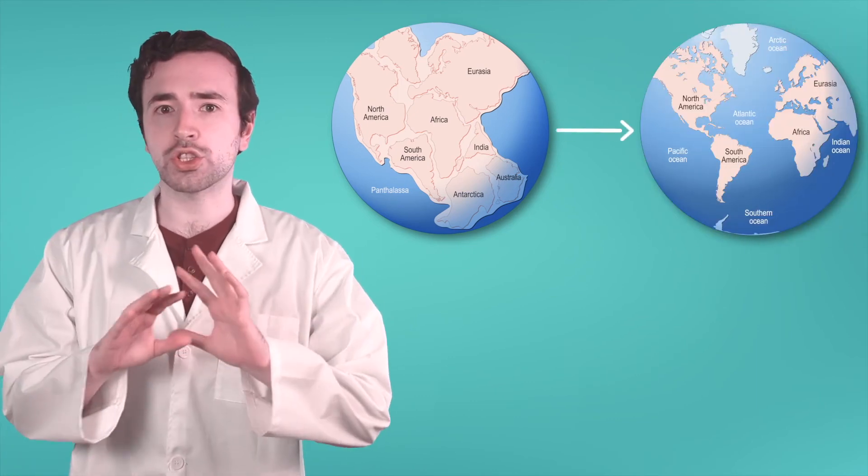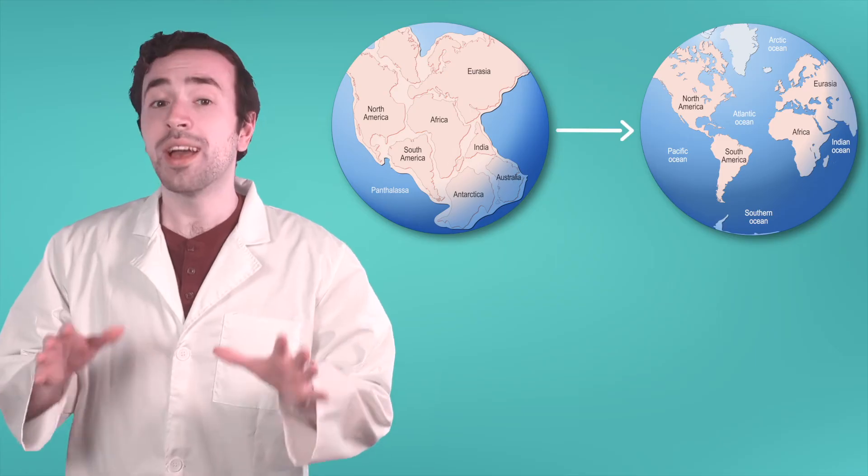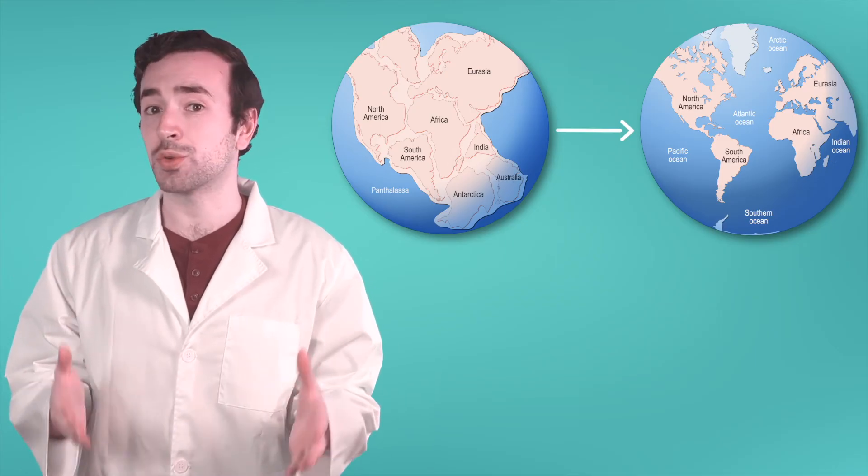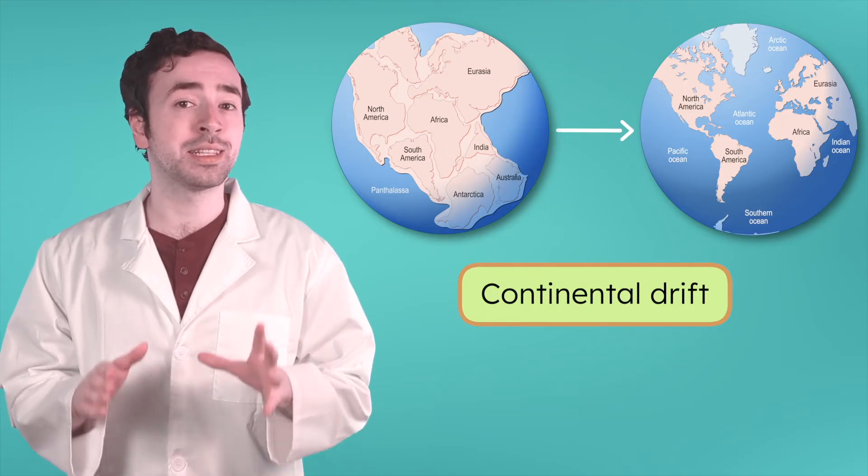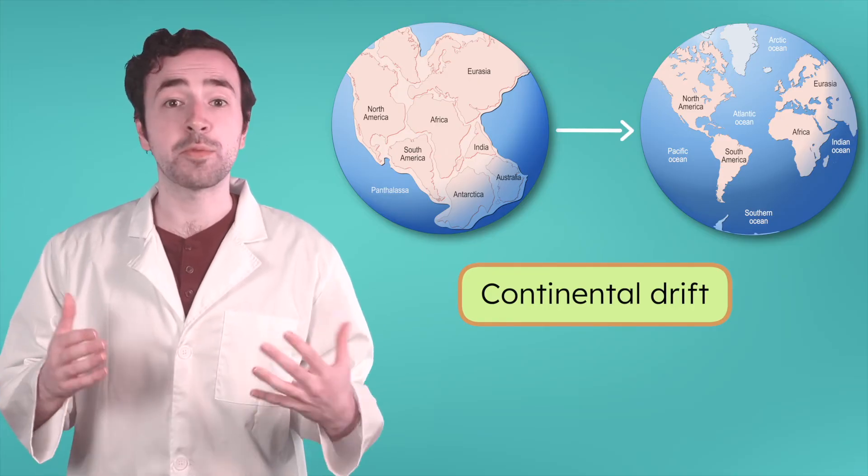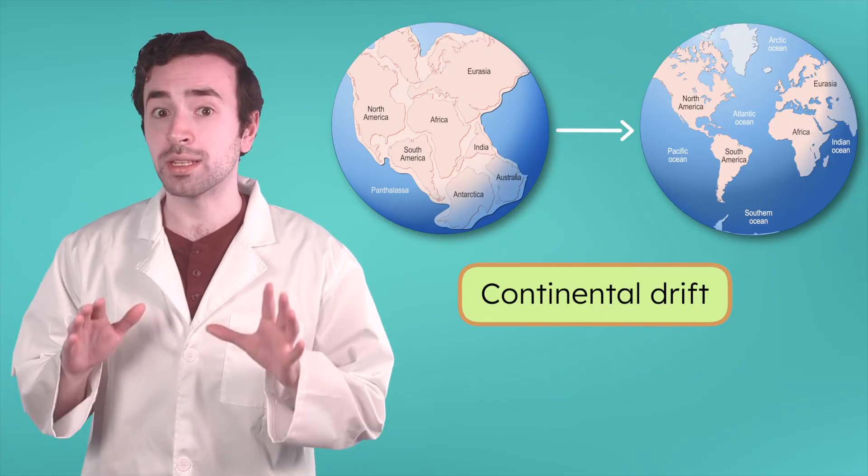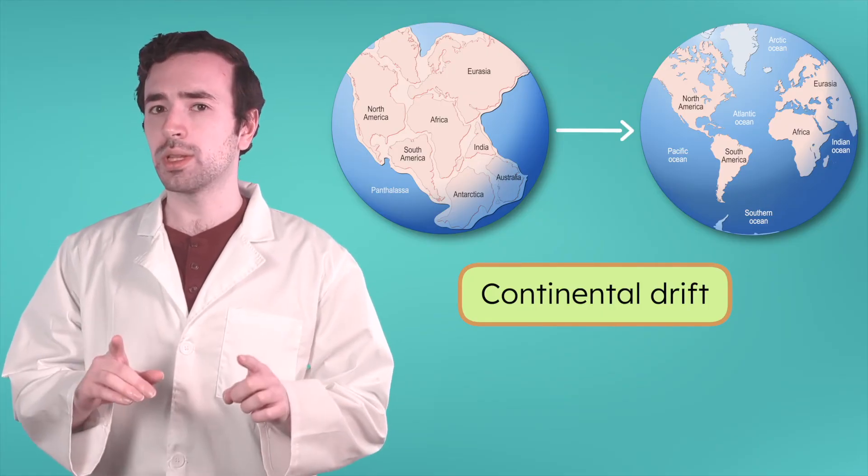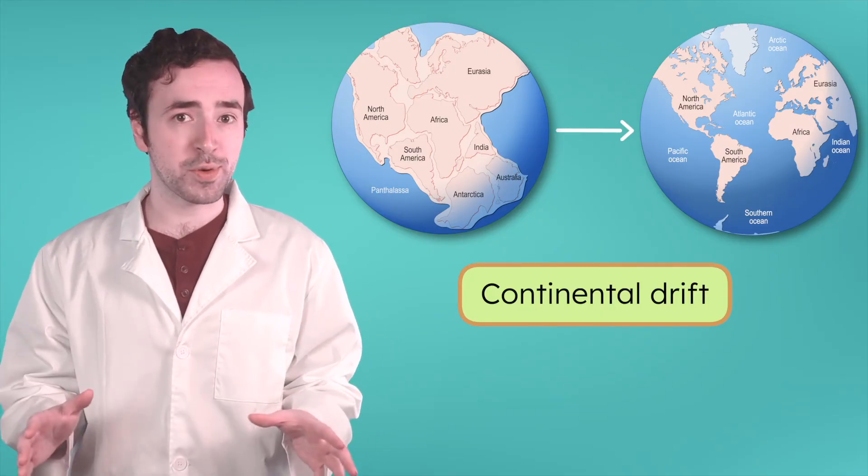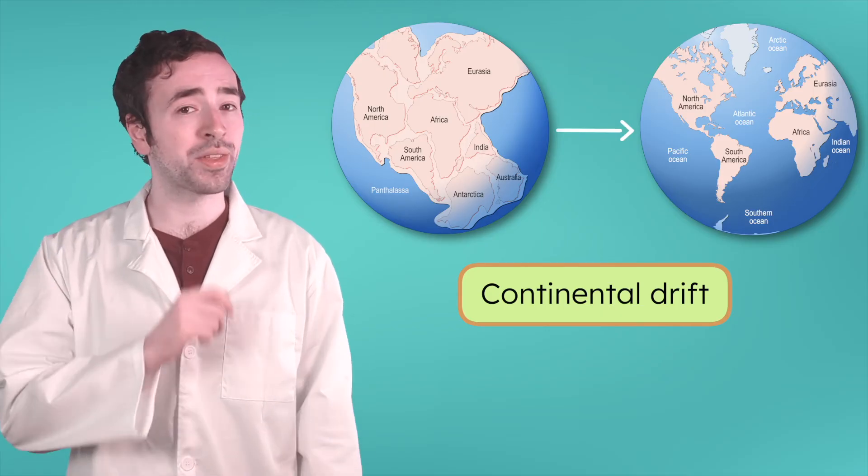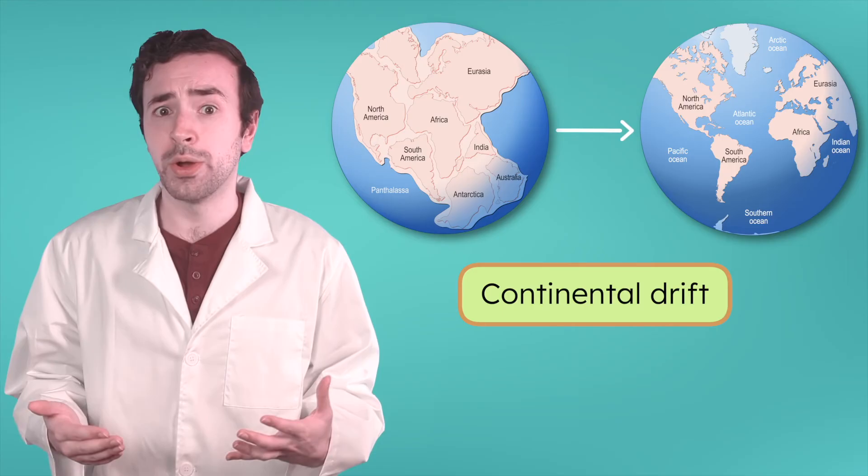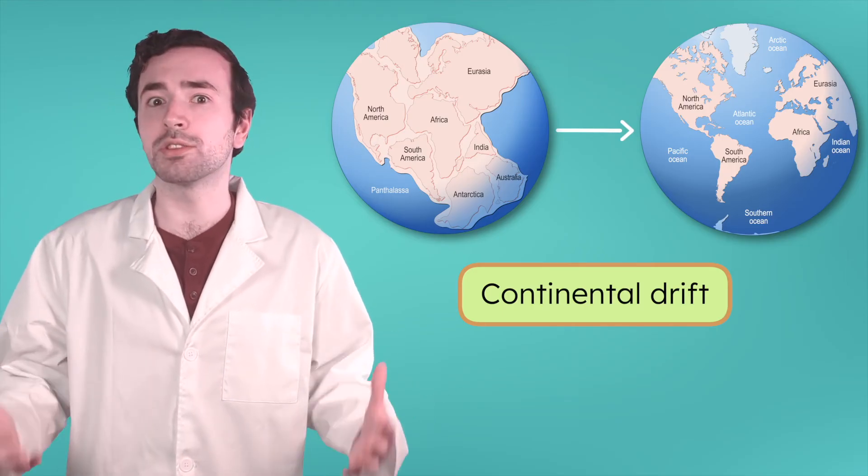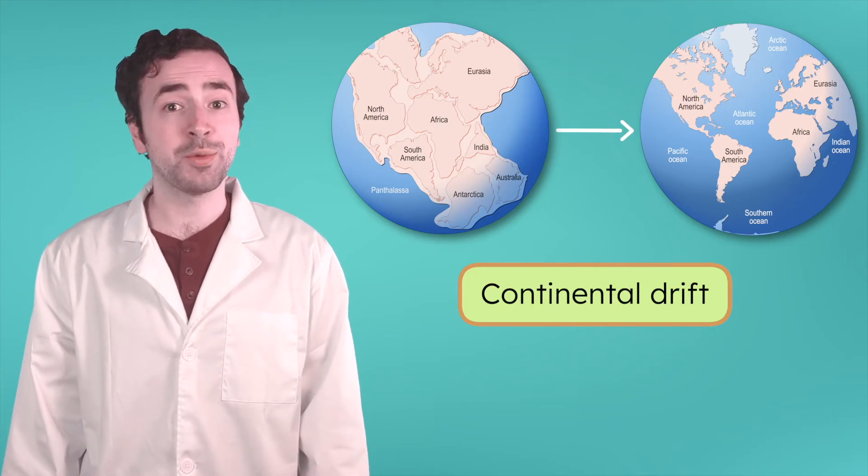It was the movement of the tectonic plates over an extremely long period of time that caused the continents to drift apart. That's what scientists call continental drift, the idea that the plates, including the continents, are always moving slowly. The land masses broke away from Pangaea and ended up where they are today. And the plates are still moving, so who knows how different the world map may look millions of years from now. Maybe one day we'll have a whole new puzzle to solve.